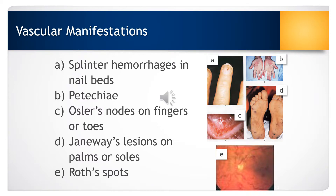Provided here are images of a variety of vascular manifestations that can occur in someone with infective endocarditis. These typically result from fragmentation of microscopic emboli from vegetative lesions that have traveled through the system and caused splinter hemorrhages in the nail beds, petechiae on the skin, Osler nodes on fingers and toes, Janeway lesions on palms or soles, and Roth spots on the retina.